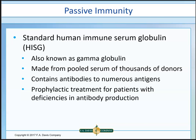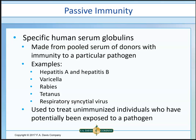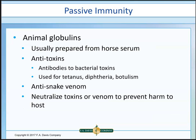Specific human serum globulins can be given for particular pathogens, including Hepatitis A and B, varicella, rabies, tetanus, and RSV (respiratory syncytial virus). Antitoxins — usually prepared from horse (equine) serum — neutralize toxins from tetanus, diphtheria, and botulism, and also include anti-venoms for rattlesnake, black widow spider, and others. They neutralize the toxins so they don't cause harm. However, you must know exactly what you're dealing with to use them.